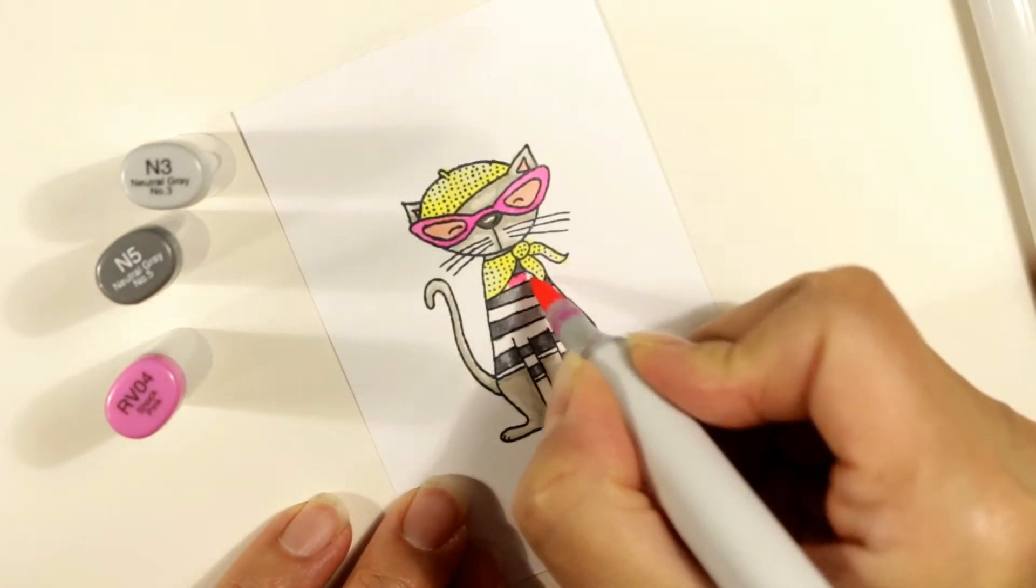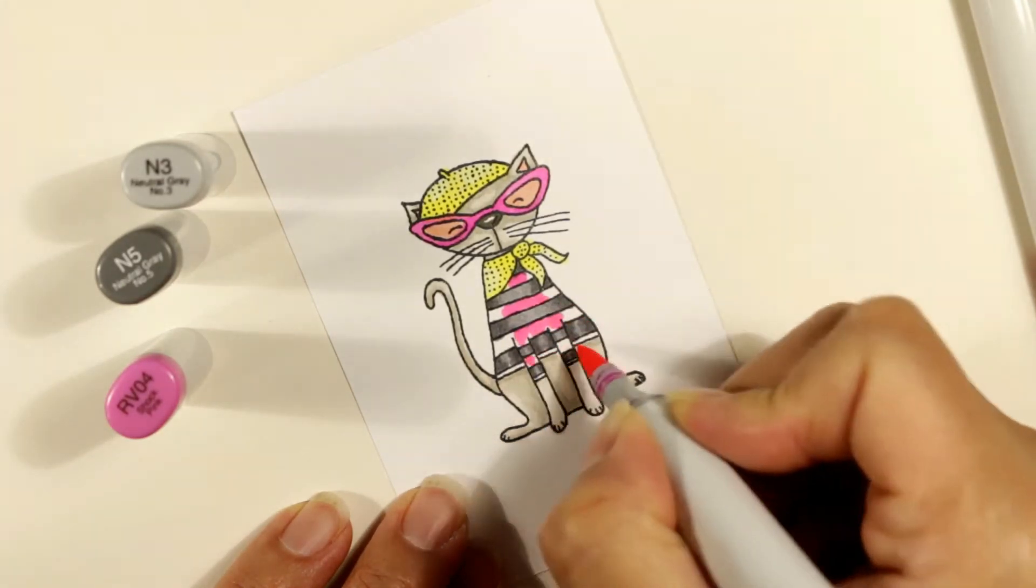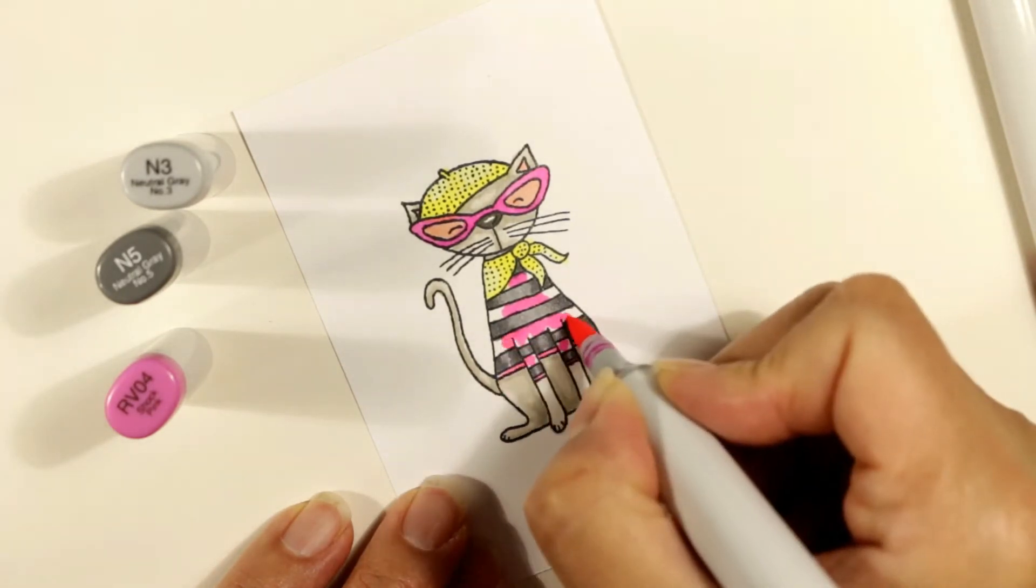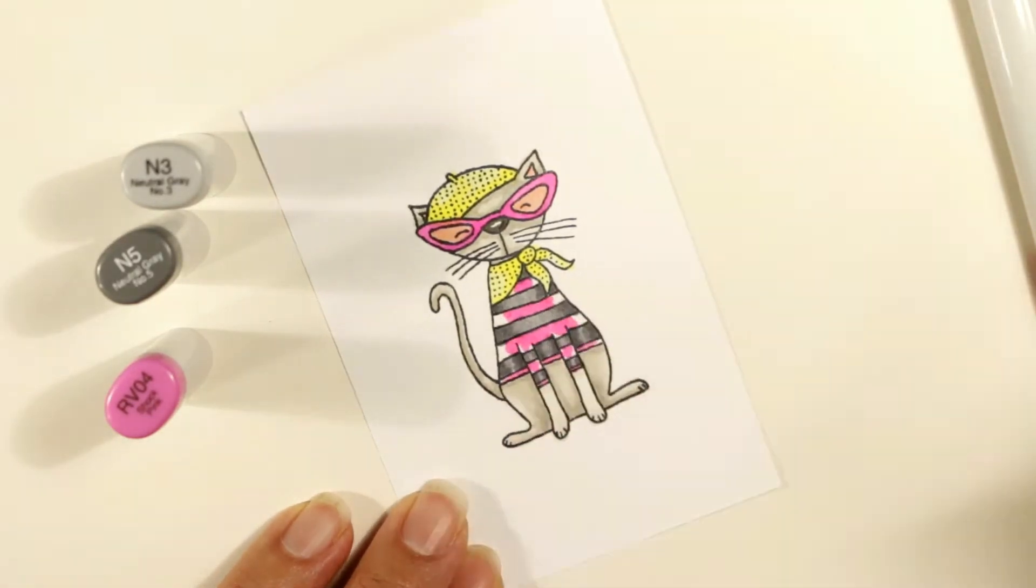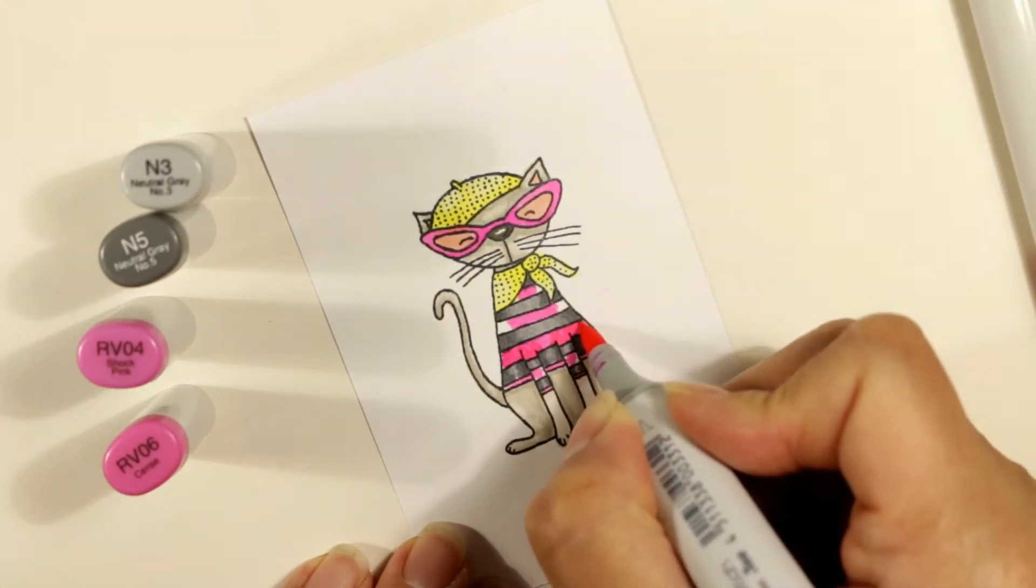Now for the alternating stripes, I'm going to use the same colors that I used in her hot pink glasses. So I'm using the lighter tones in the middle, and then I'm going to use the slightly darker tones along the edges. So the RV4 in the middle, RV06 in the edges.